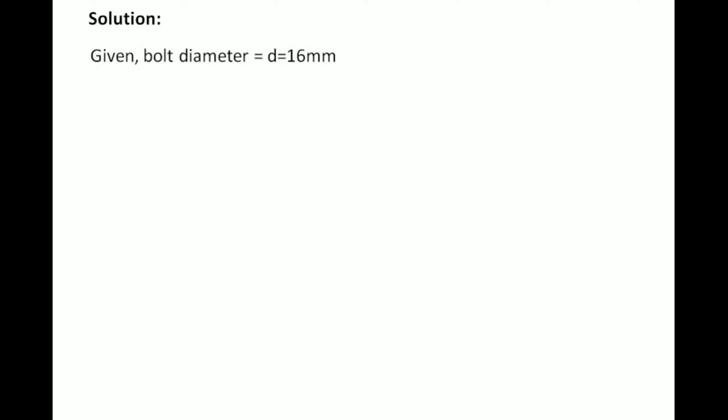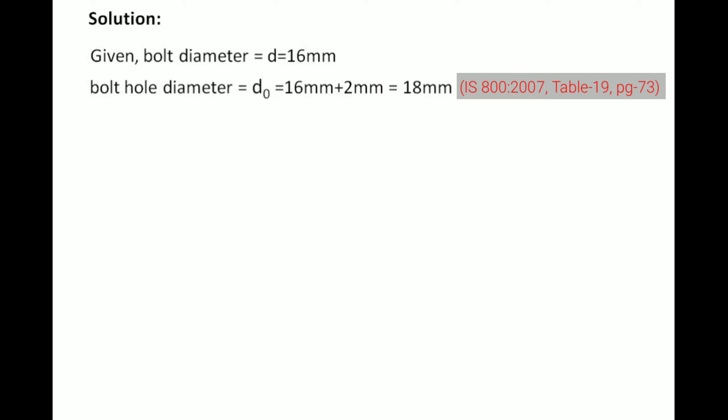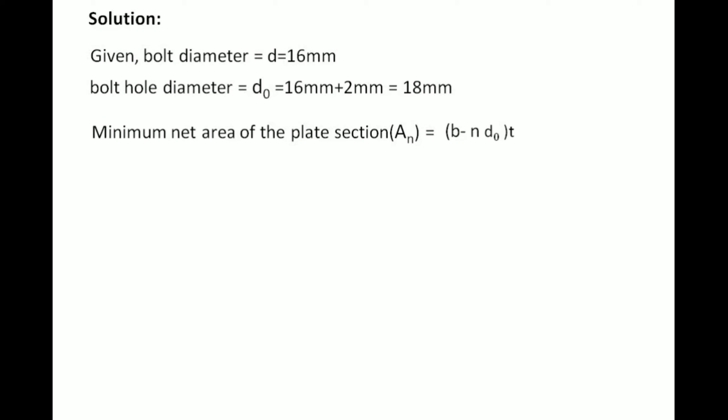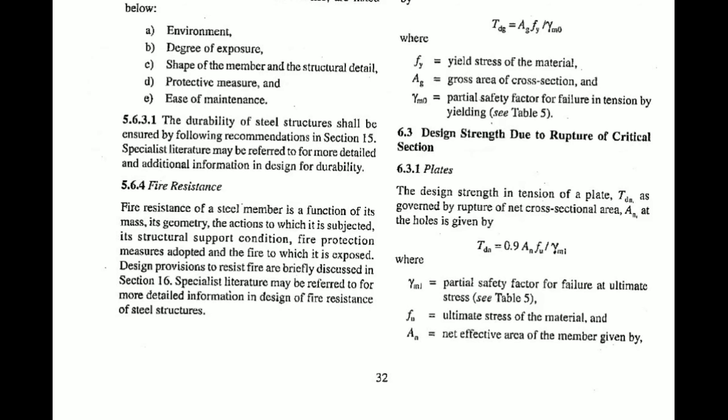In the solution, the diameter is 16 mm, and we know there will be a clearance of 2 mm for the hole, so the diameter of the hole will be 18 mm. The minimum net section area is given by: An = (b − n·dh) × t.